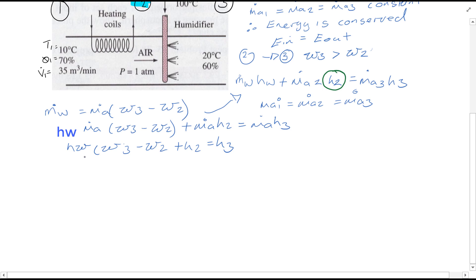And we rearrange. And remember we're trying to find H2, so finally after rearrangement and cancellations, H2 equals H3 minus Hw bracket omega 3 minus omega 2.